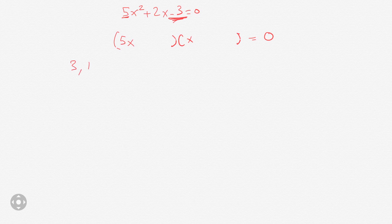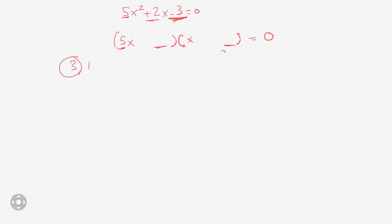Now we just have to position it. The positive 2 is the sum, so we want one number here and that number multiplied by 5, when we add it with this number multiplied by 1, to give us positive 2. If we put the 3 here and the 1 here, 5 times 3 is 15 and 1 times 1 is 1, so that would be too much of a difference.